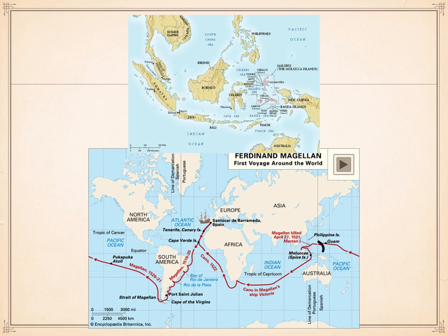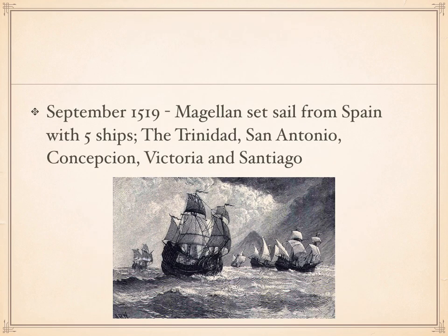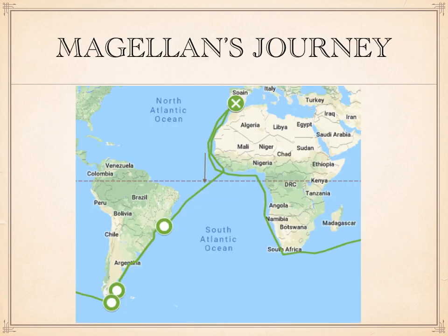Magellan believed he could sail around the bottom of South America and find a passage to the Spice Islands, proving they actually belonged in Spain's realm of authority. So in September 1519, Ferdinand Magellan set sail with five ships from Seville, a port in Spain. He set sail on his flagship the Trinidad, and the four other ships were the San Antonio, the Concepcion, the Victoria, and the Santiago. Magellan had a crew of around 260 men.